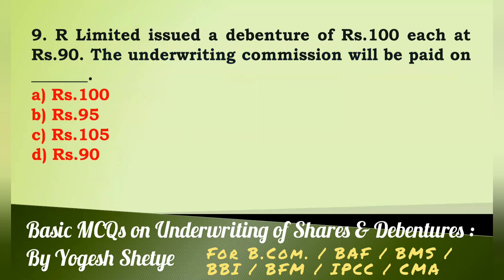Question 9: A R Limited issued a debenture of rupees 100 each at rupees 90. The underwriting commission will be paid on issue price, that is rupees 90. Answer D.